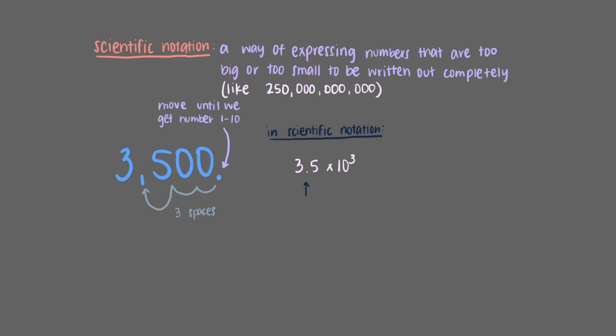Since we moved the decimal point 3 spaces, that means we must multiply 3.5 by 10 to the third power. When we multiply 3.5 by 10 to the third power, we get 3,500, which lets us confirm that our scientific notation expression is correct.